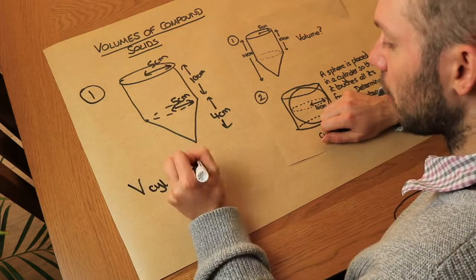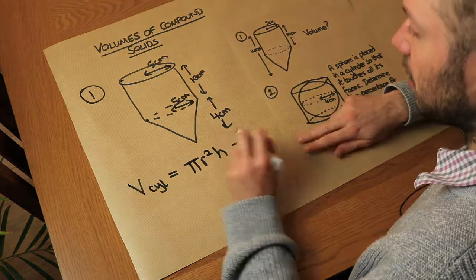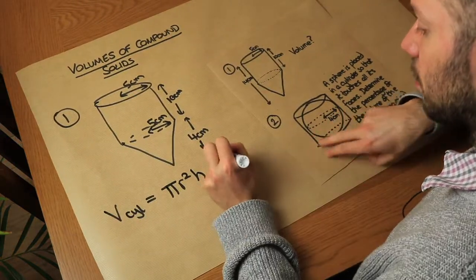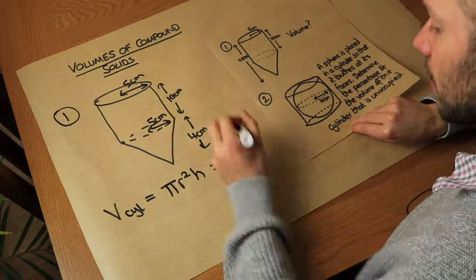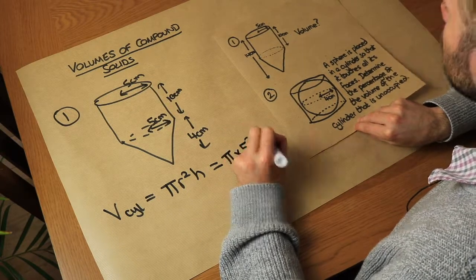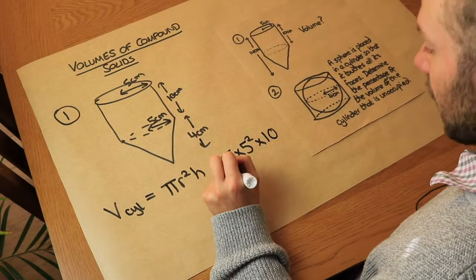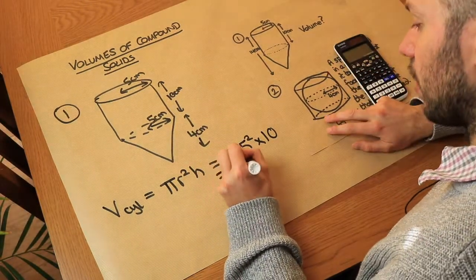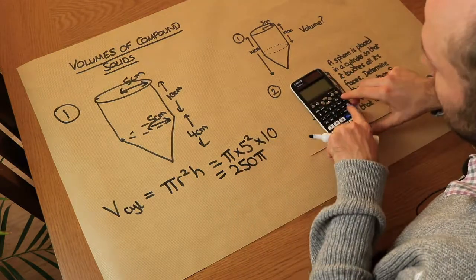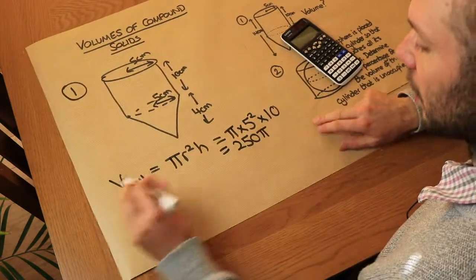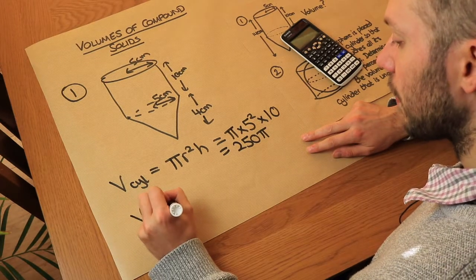The volume of a cylinder is π r² h. Using the values we have, it's π times 5 squared times 10, which gives us 250π. If you do it on a calculator and press the SD key you can get it as a decimal, but we'll worry about that at the end.